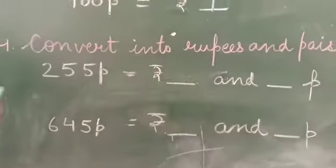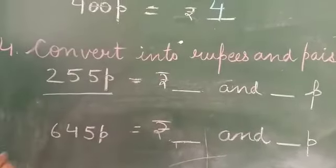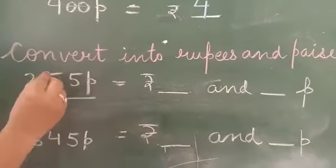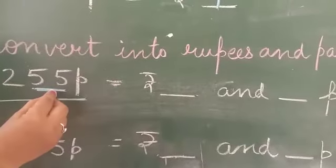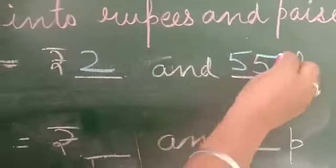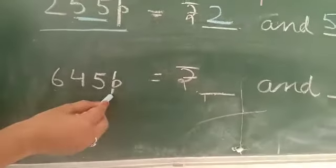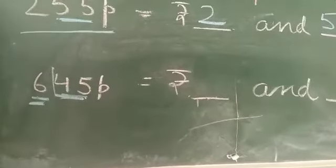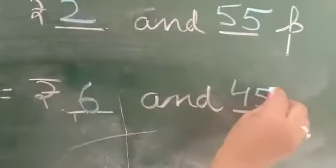The last two digits - convert into rupees and paise. You have 255 paise given. You have to convert this into rupees and paise. The last two digits you leave - those are your paise. So what is left? 2 rupees and 55 paise. Take another: 645 paise. Leave the last two digits - that's the paise. What remains? 6 rupees and 45 paise. Clear?